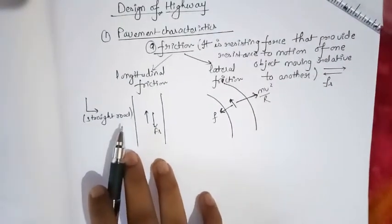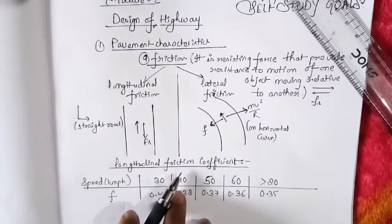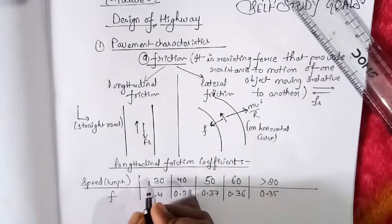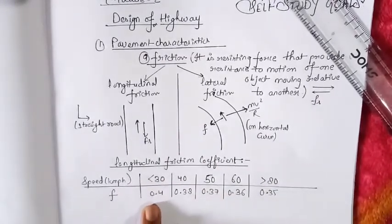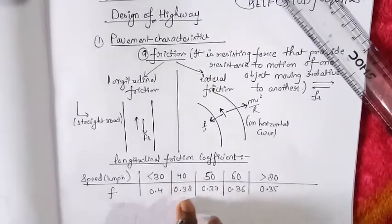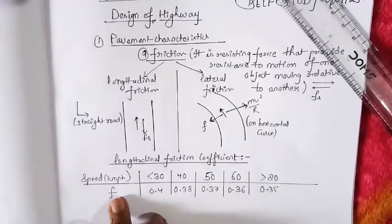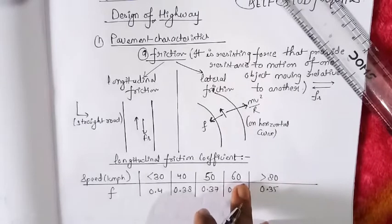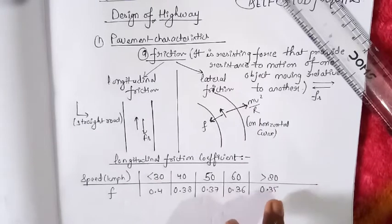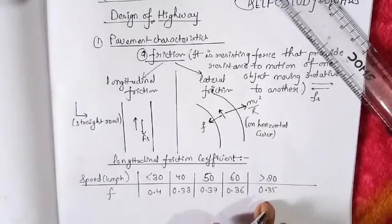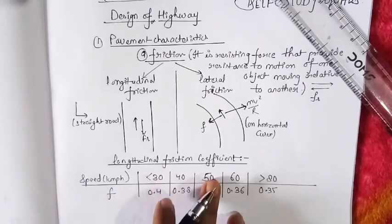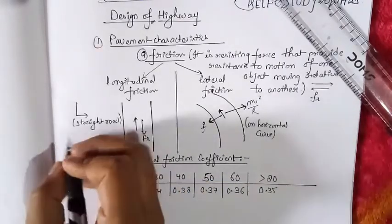We will now see the value of longitudinal friction as per speed. This table shows the longitudinal friction coefficient depending on vehicle speed. When speed is less than 30 km/h, the friction coefficient is 0.40. At 40 km/h it is 0.38, at 50 km/h it is 0.37, at 60 km/h it is 0.36, and when speed is greater than 80 km/h the longitudinal friction coefficient is 0.35.